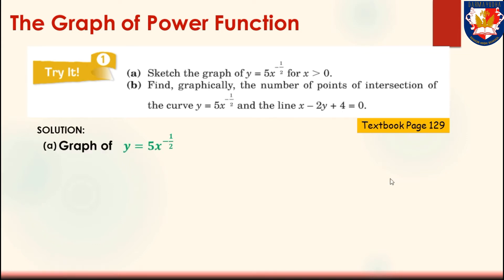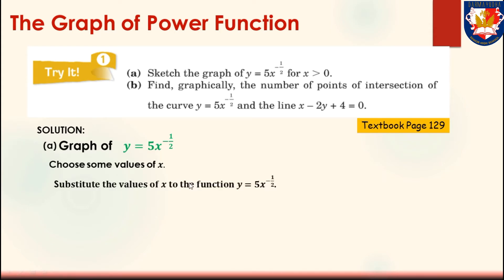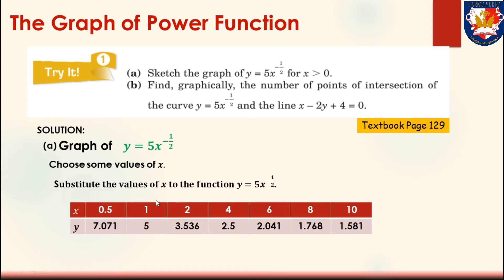To sketch the graph of y equals 5x to the power of negative 1 over 2, first choose some values of x and then substitute those values into the function. We will have a table consisting of the values of x and y. For x equals 0.5, y equals 7.071. For x equals 1, y equals 5. For x equals 2, y equals 3.536, and so on.